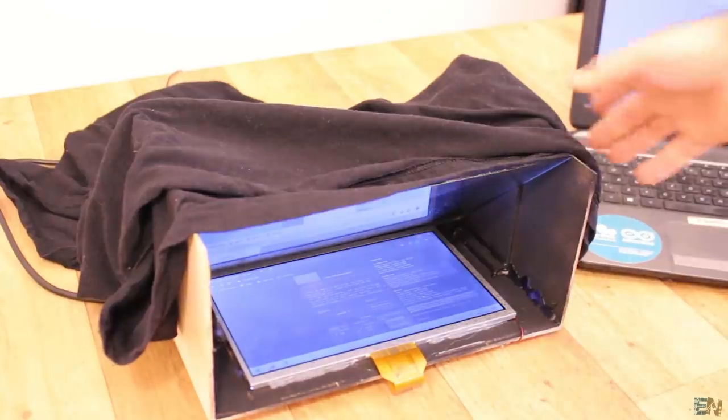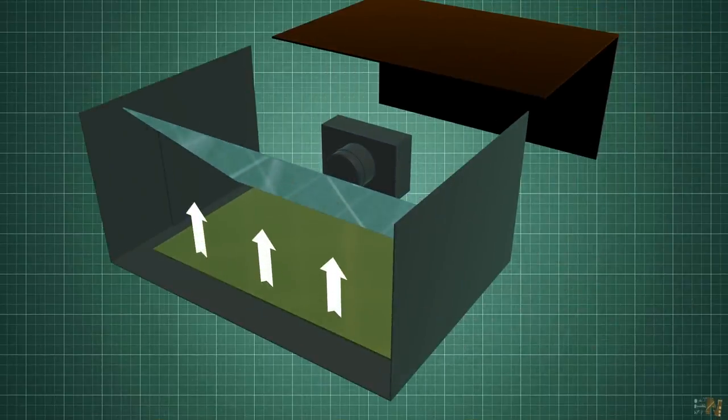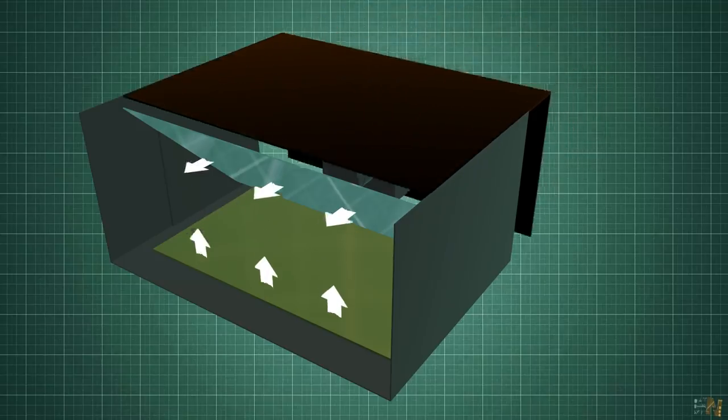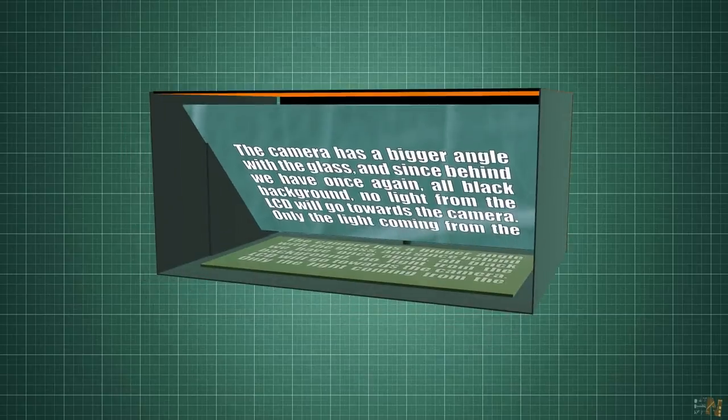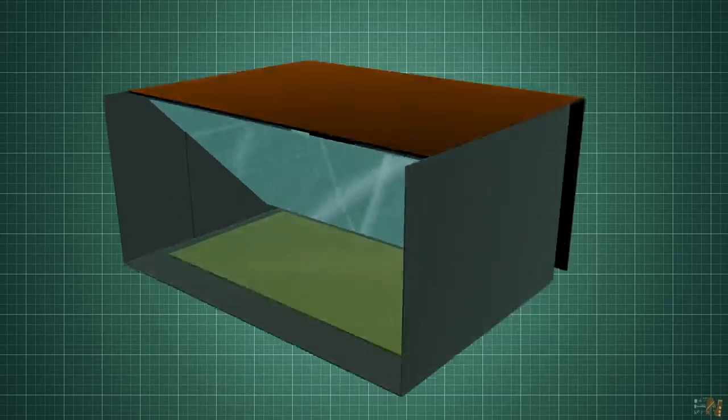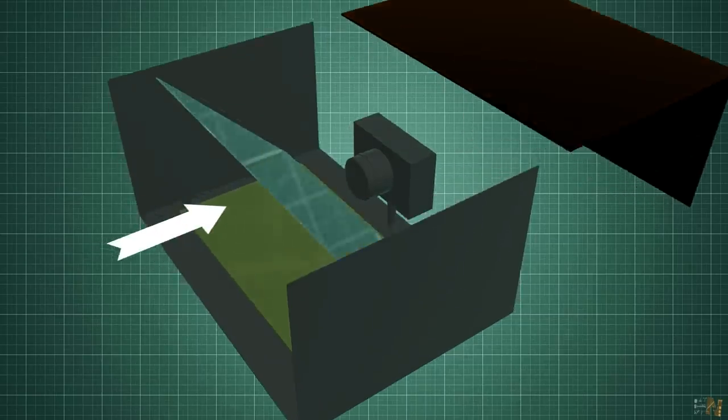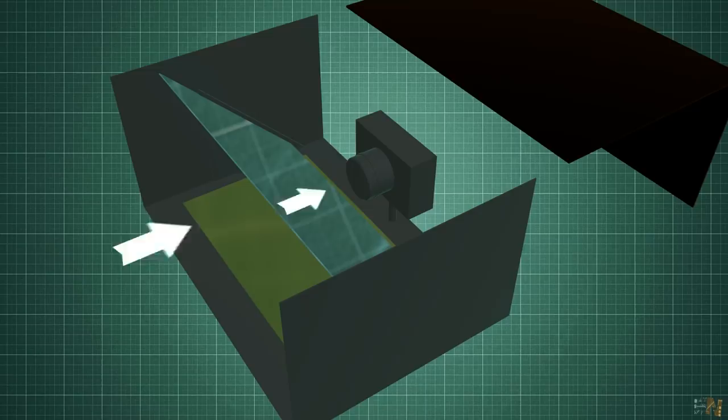So this is how this type of prompter works. The light from the LCD goes up and reflects into the glass. And since we have a black background behind, we can see the text quite well. The camera has a bigger angle with the glass. And since behind we have once again a black background, no light from the LCD will go towards the camera, only the light coming from the front. So in this way we can record with the camera while also seeing the text just in front of us.